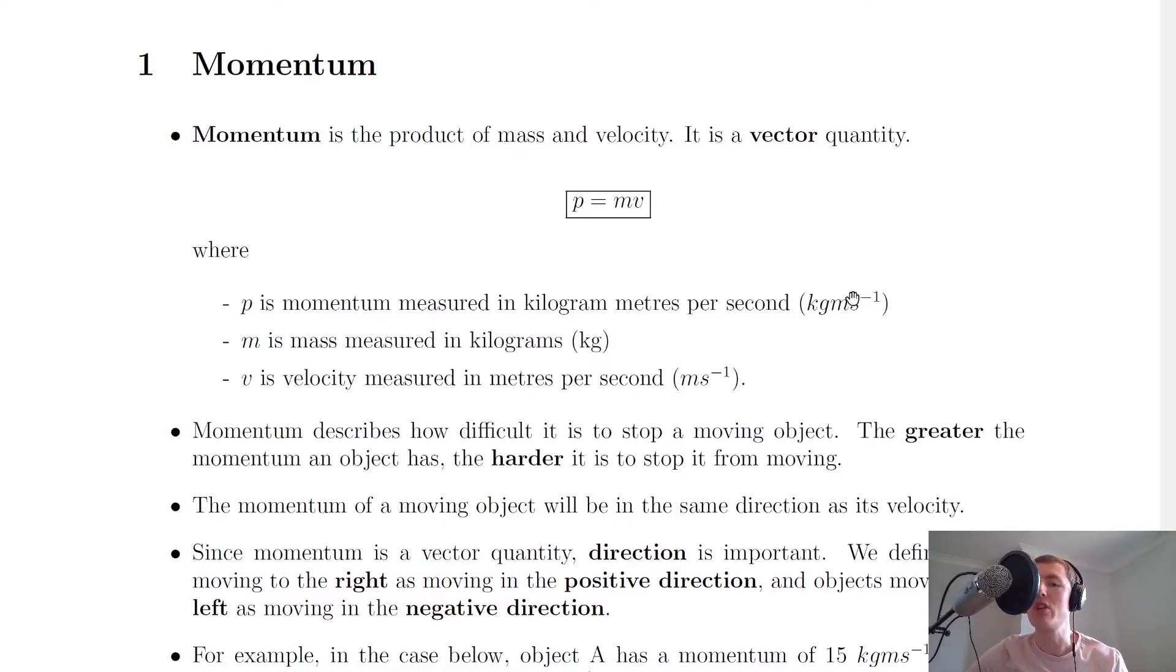Now a way to see why we've got units of kilogram meters per second is because we've just got the product of mass and velocity. The units of mass are kilograms, the units of velocity are meters per second, so because those two are multiplied by each other, then we just multiply the separate units together, and we get kilogram meters per second.